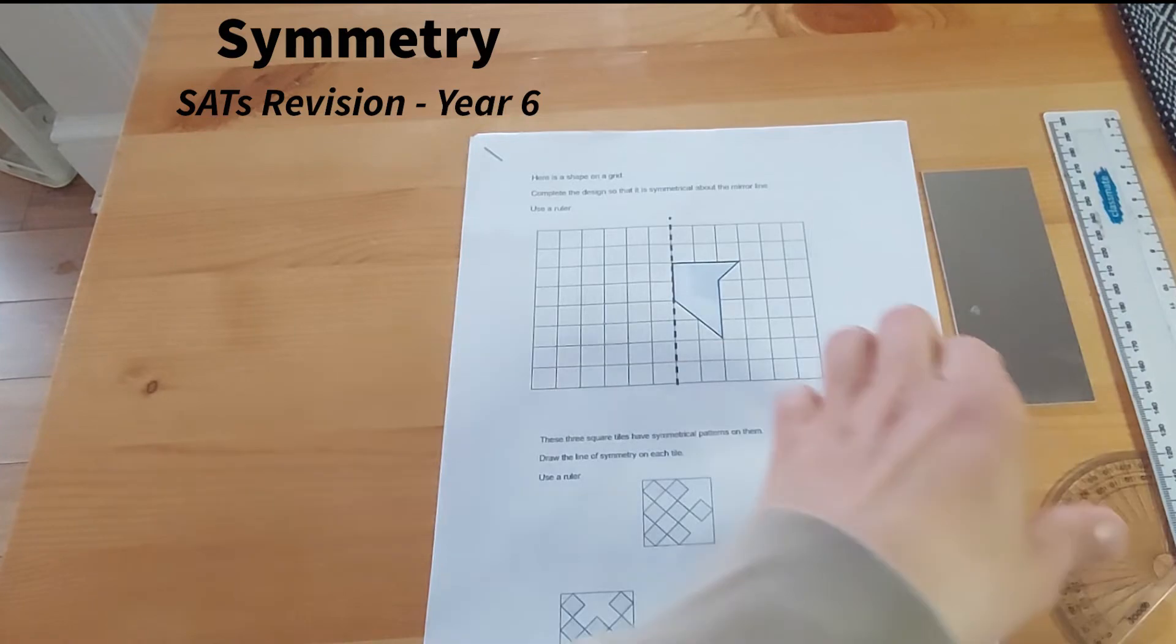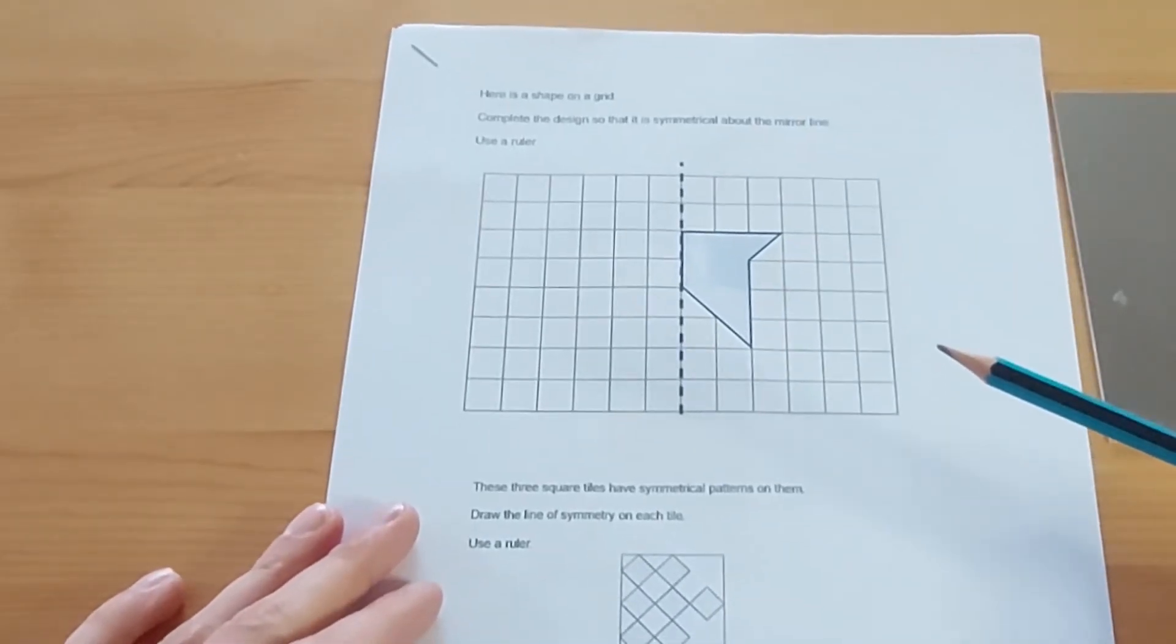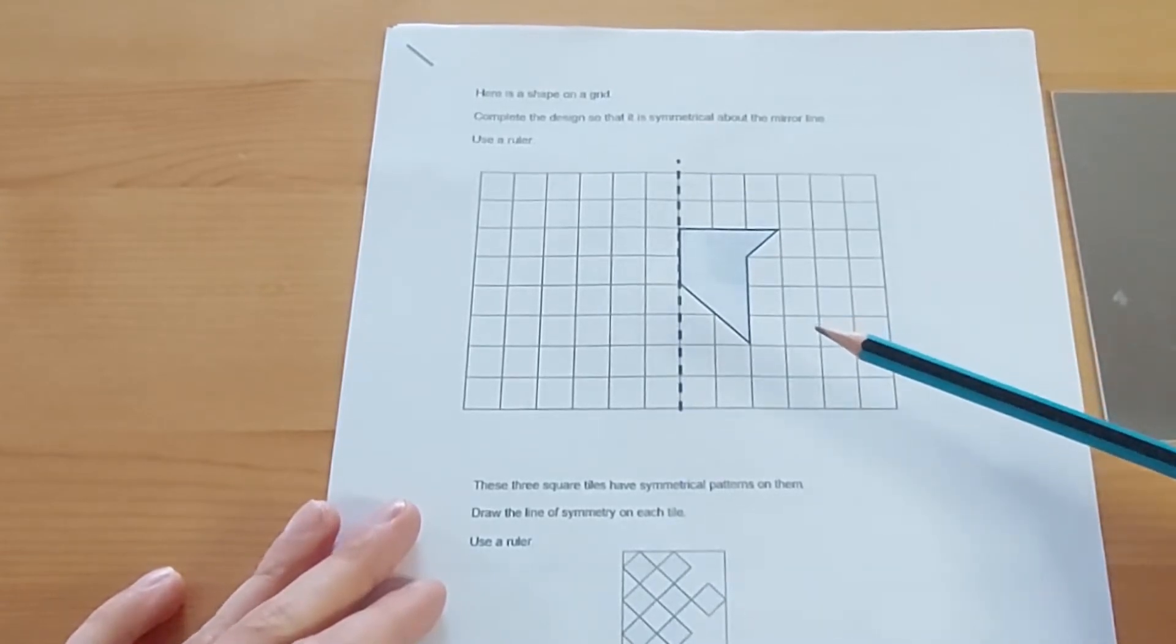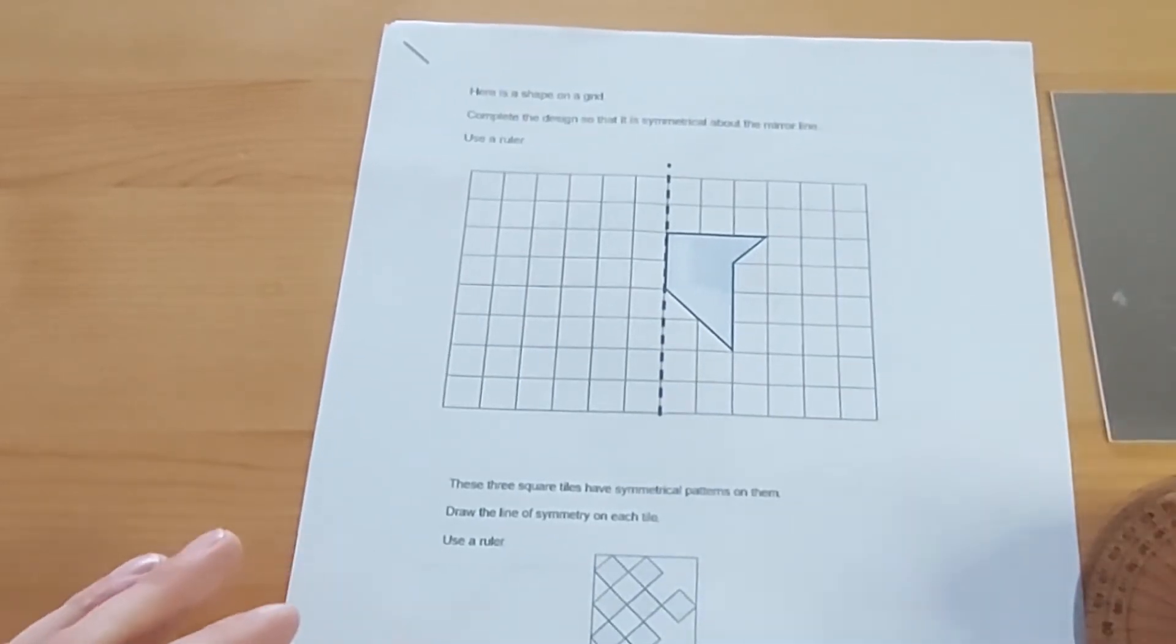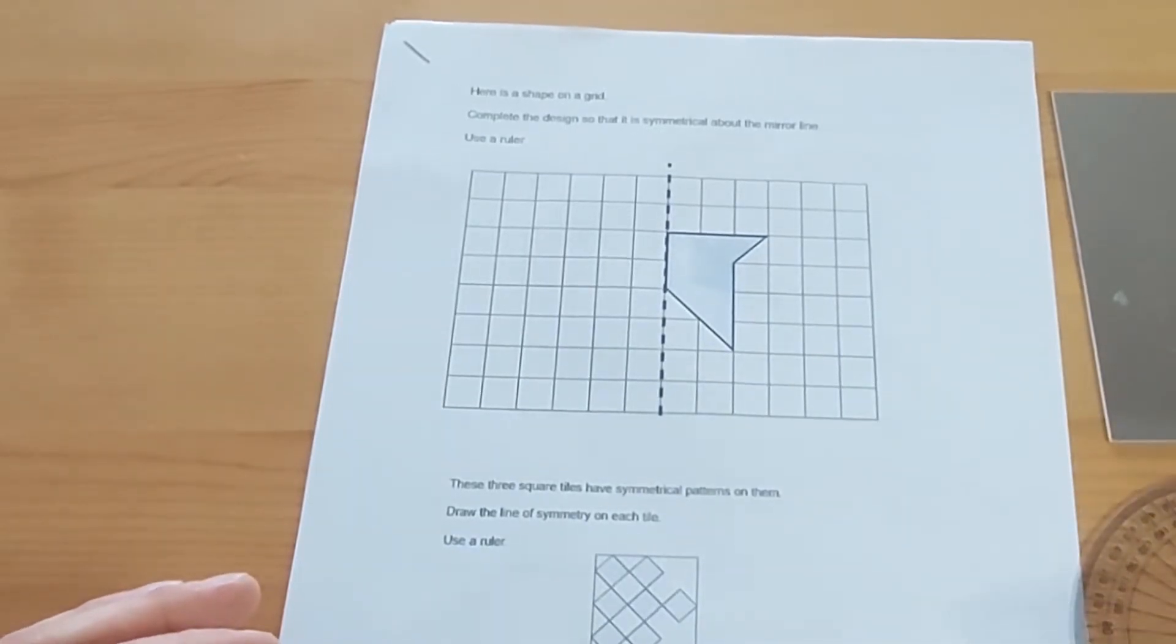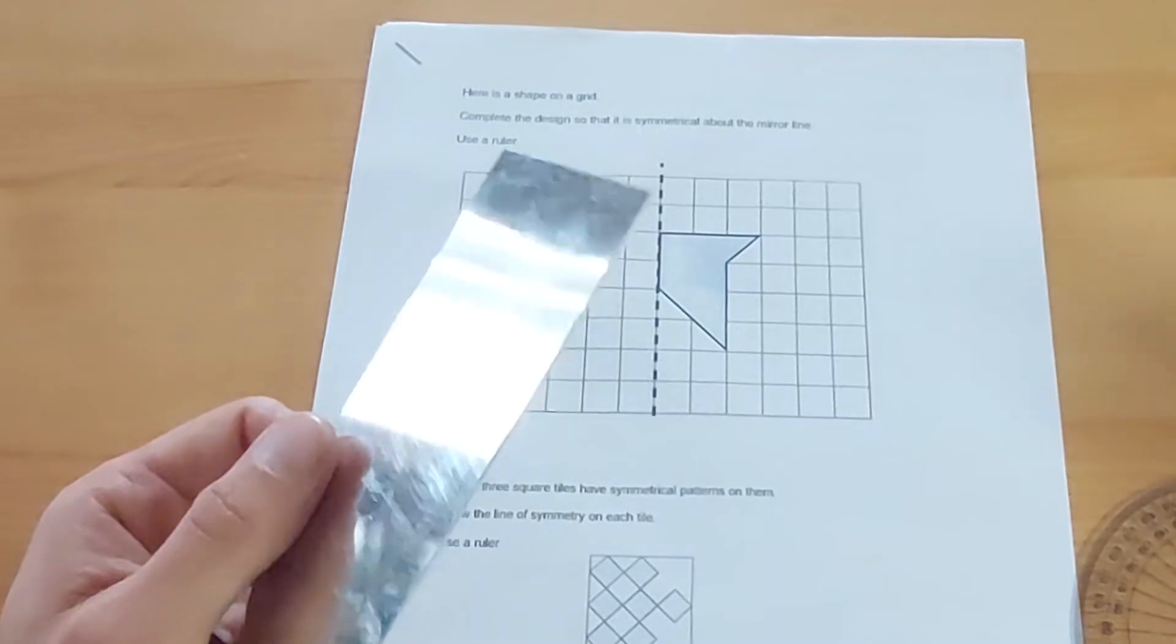So the first question I want to look at is a symmetry question. Now the question says here, here is a shape on a grid. Again I'm just going to repeat myself but these are taken from a SATs paper so these are actual SATs questions. Complete the design so that it is symmetrical about the mirror line. Now in the test the children will get a protractor to help them with their angles questions and measuring angles. They're allowed a ruler and they're allowed a mirror but nothing else, obviously a pencil to write with. So for this question the mirror comes in useful.